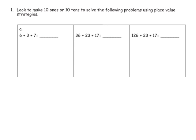And we're going to start with a simple problem over here. So 6 plus 3 plus 7. And we're going to look for bundles of 10. And we can see that 3 and 7 is 10. So 6 plus 10 gives us 16.